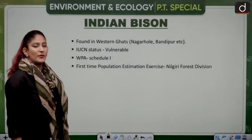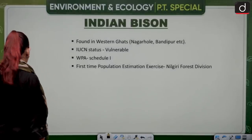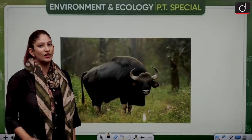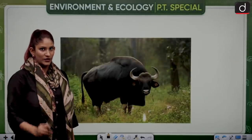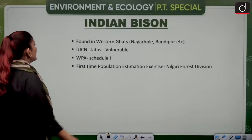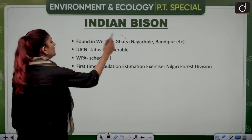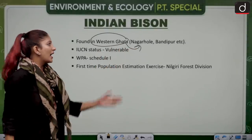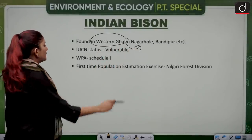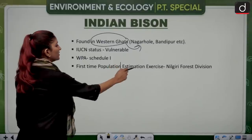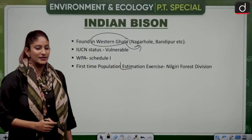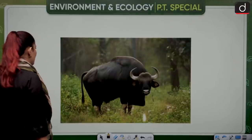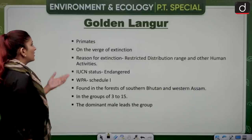The Indian bison is listed as vulnerable on the IUCN Red List and is protected under Schedule 1 of the Wildlife Protection Act. It is found in the Western Ghats in the Nagarhole and Bandipur region. The first population estimation exercise was conducted in the Nilgiri Forest Division.